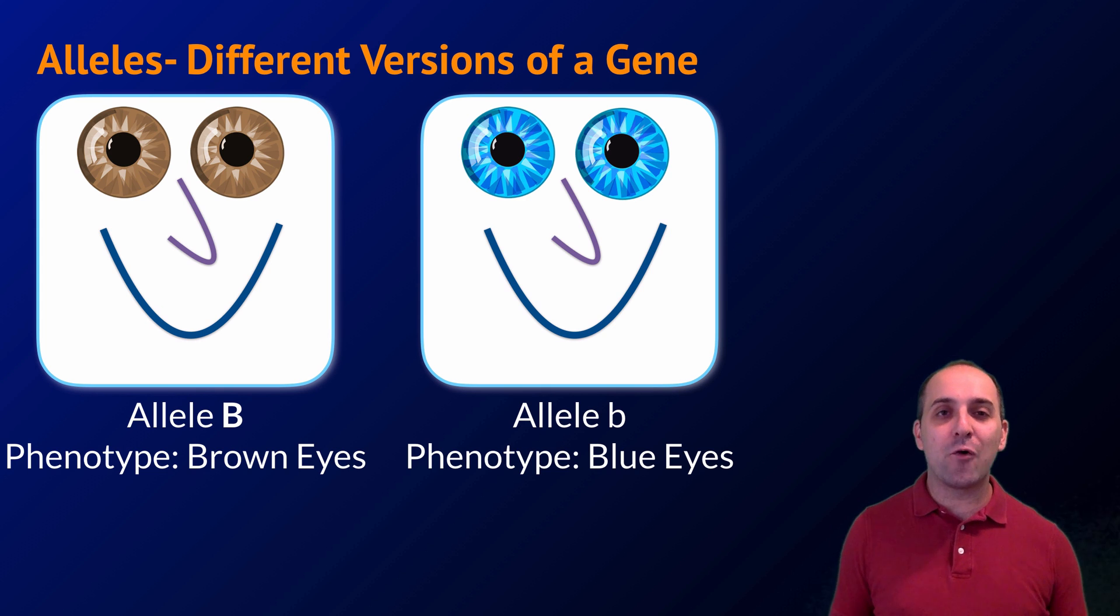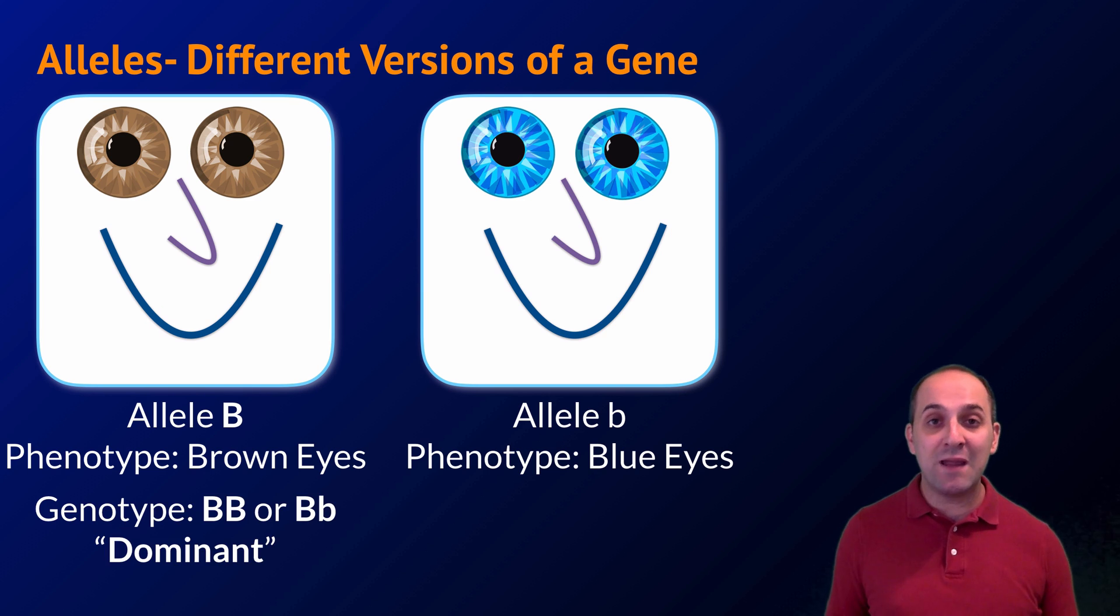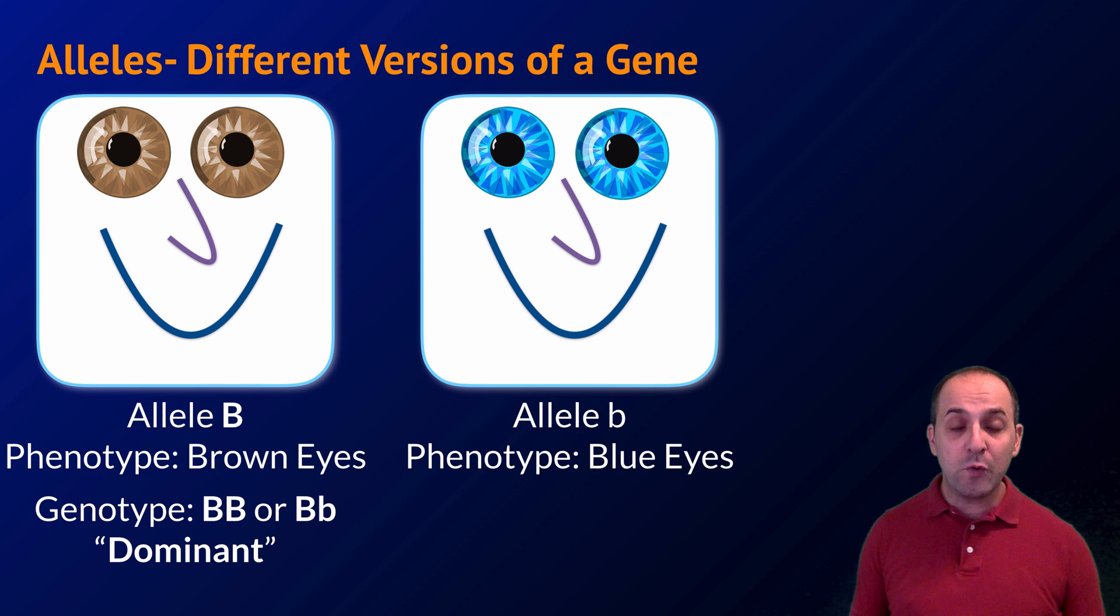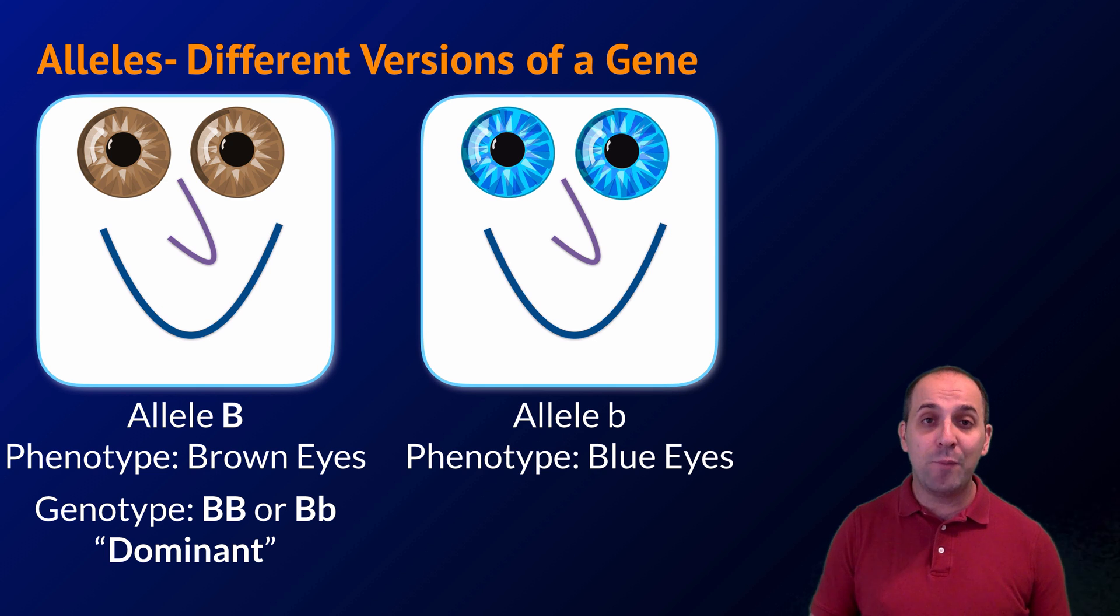In any sexually reproducing organism there's going to be two copies of every gene, or two alleles for every gene. One that's inherited from the mother and one that's inherited from your father. Looking at our eye color example, we see that if you inherit two big B alleles, you'll have brown eyes. But also if you inherit a big B and a little b allele, you'll also have brown eyes.